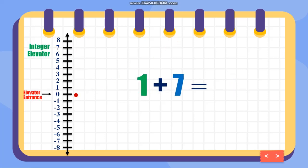Another example: I have positive 1 and positive 7. Starting from 0, going up — positive 1. Then another positive, which is 7. From positive 1, going up 7 more times — that's 7 movements. So the answer is positive 8.